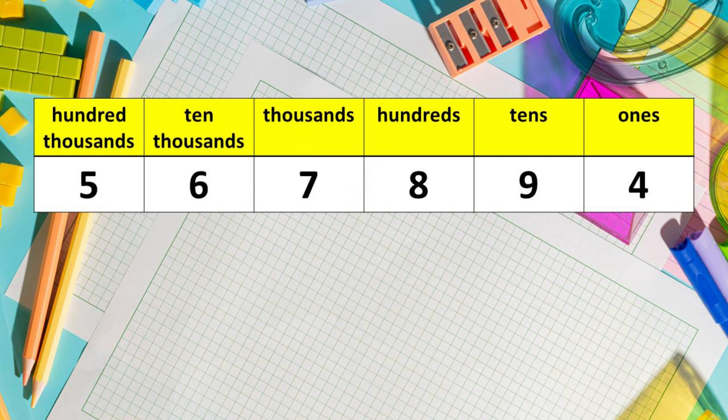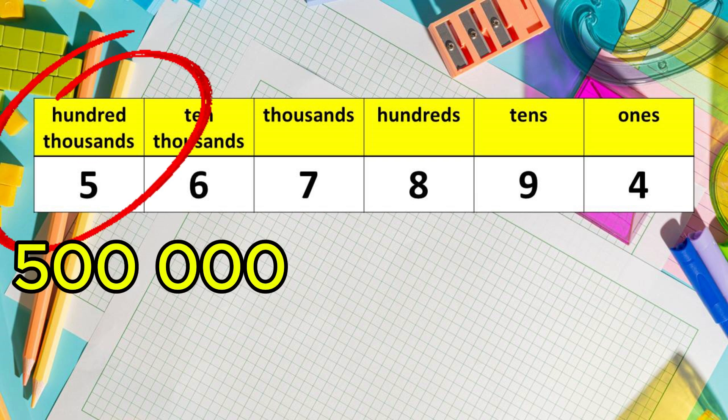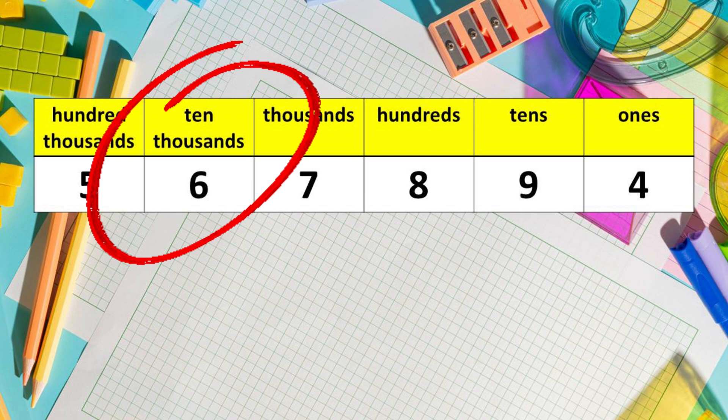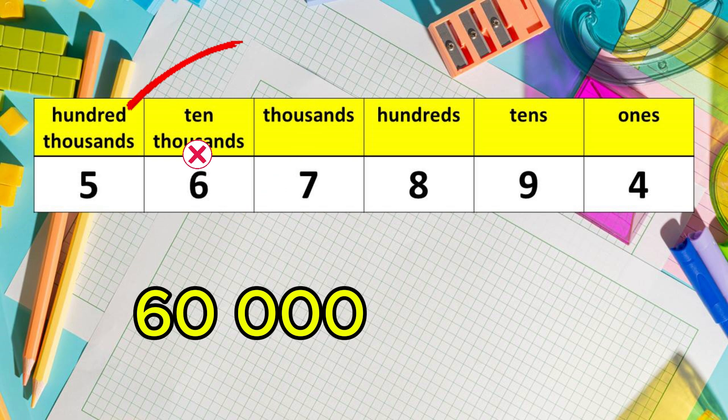How about the value of 5? Since 5 is in the hundred thousands, multiply 100,000 by 5. Therefore, the value of 5 is 500,000. How about the value of 6? It is in the ten thousands place. Ten thousand times 6 is 60,000. So the value of 6 is 60,000.